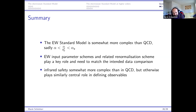In the sin(theta_W) scheme, the weak mixing angle is an input parameter fixed by the renormalization condition and receives no higher-order corrections — it can be extracted independently from measurement, for example from the forward-backward asymmetry. The drawback is that the W mass becomes a derived parameter, so the W propagator pole and physical W mass receive higher-order corrections and are no longer constants. We cannot have all cakes and eat them too — each scheme involves trade-offs between which quantities are fixed and which receive corrections.